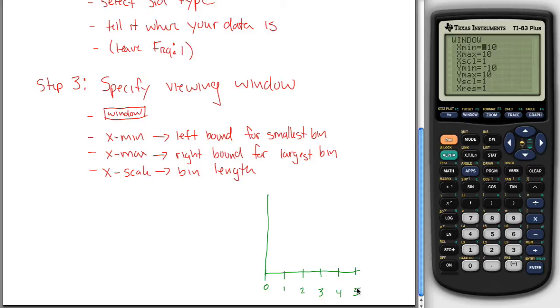So the right bound for my largest bin is actually going to be 5 in this example, even though they're GPAs and they only go up to 4. Your X minimum should be 0 in this example. And your X maximum should be 5, because this is 0 and this is 5. And your X scale, 1, because I wanted each of these bins to have length 1.